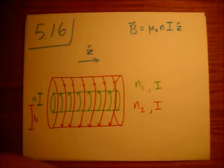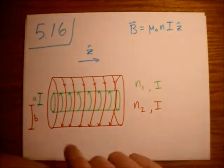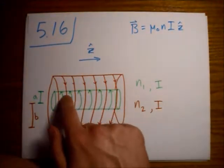This is Griffith's Electrodynamics problem 5.16. We've got two solenoids here, a large one of radius B and a smaller one of radius A.